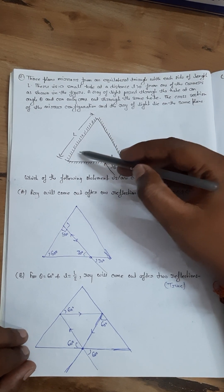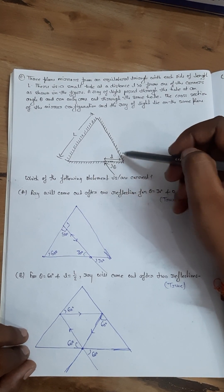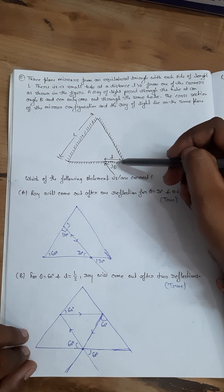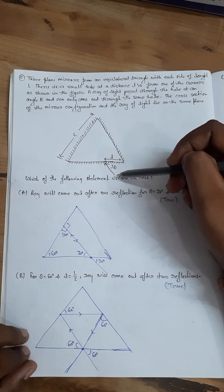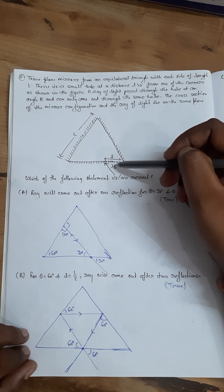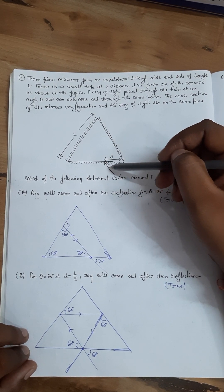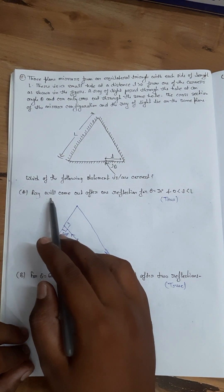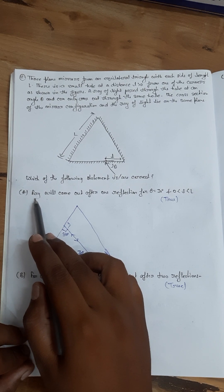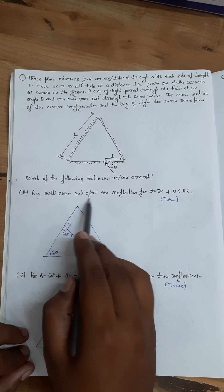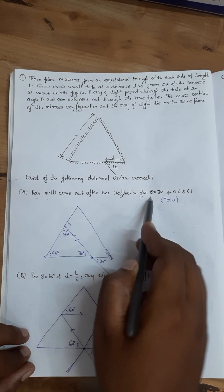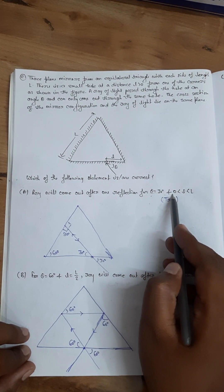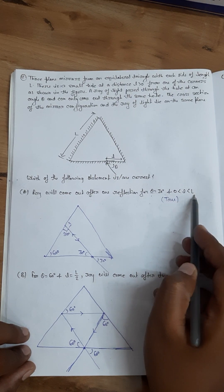We have a mirror configuration in equilateral triangle shape. There is a hole at small distance l, and the ray enters at angle theta. The light will come out through this hole. We have 4 conditions. The first condition: the light will come out after one reflection for theta equal to 30 degrees and small l between 0 to capital L.